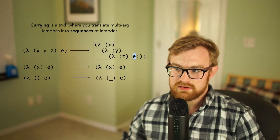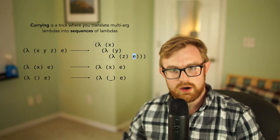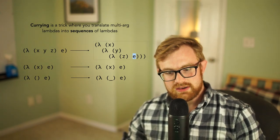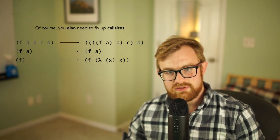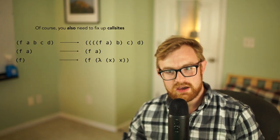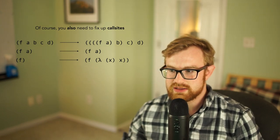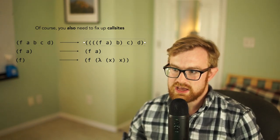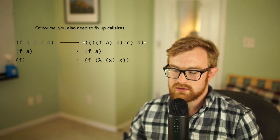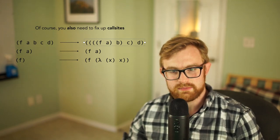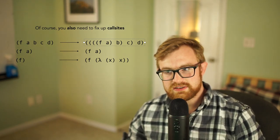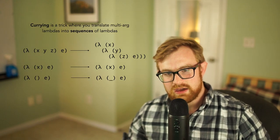The only trick is if I do that, I have to remember to fix up application call sites appropriately. So the place where I call f now has to be translated to be f applied to a, all of that applied to b, applied to c, applied to d. All right, so currying fixes up lambdas and application.